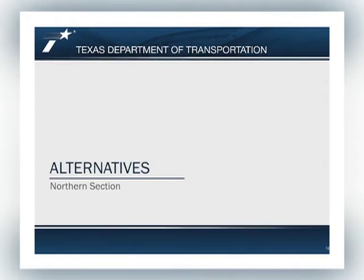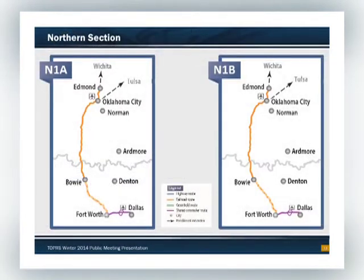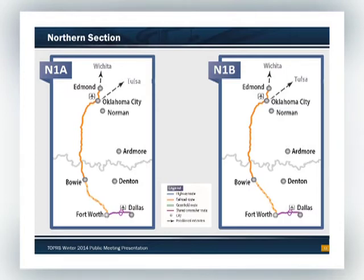Now we'll get into the alternatives, going through the northern ones fairly quickly since you're probably more interested in the southern routes. These two routes look very similar — they use existing freight lines down from Oklahoma City to Fort Worth. From the BNSF line, one follows the UP down to Bowie, and then MB2 jumps onto the BNSF line at Bowie down into Fort Worth. We'd use the TRE rail line as a connection across to Dallas, and also make a connection to DFW Airport and to the entertainment districts in Arlington.